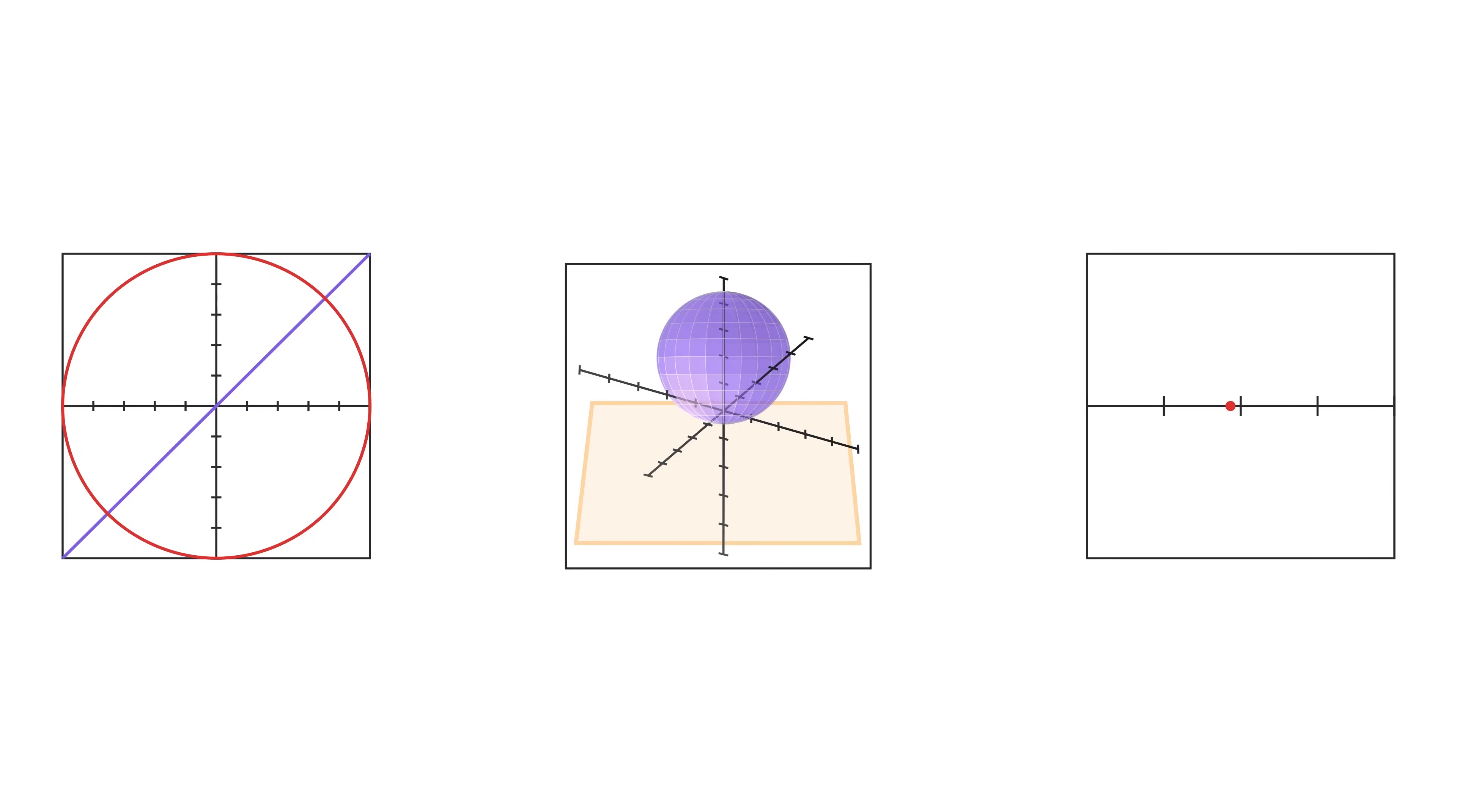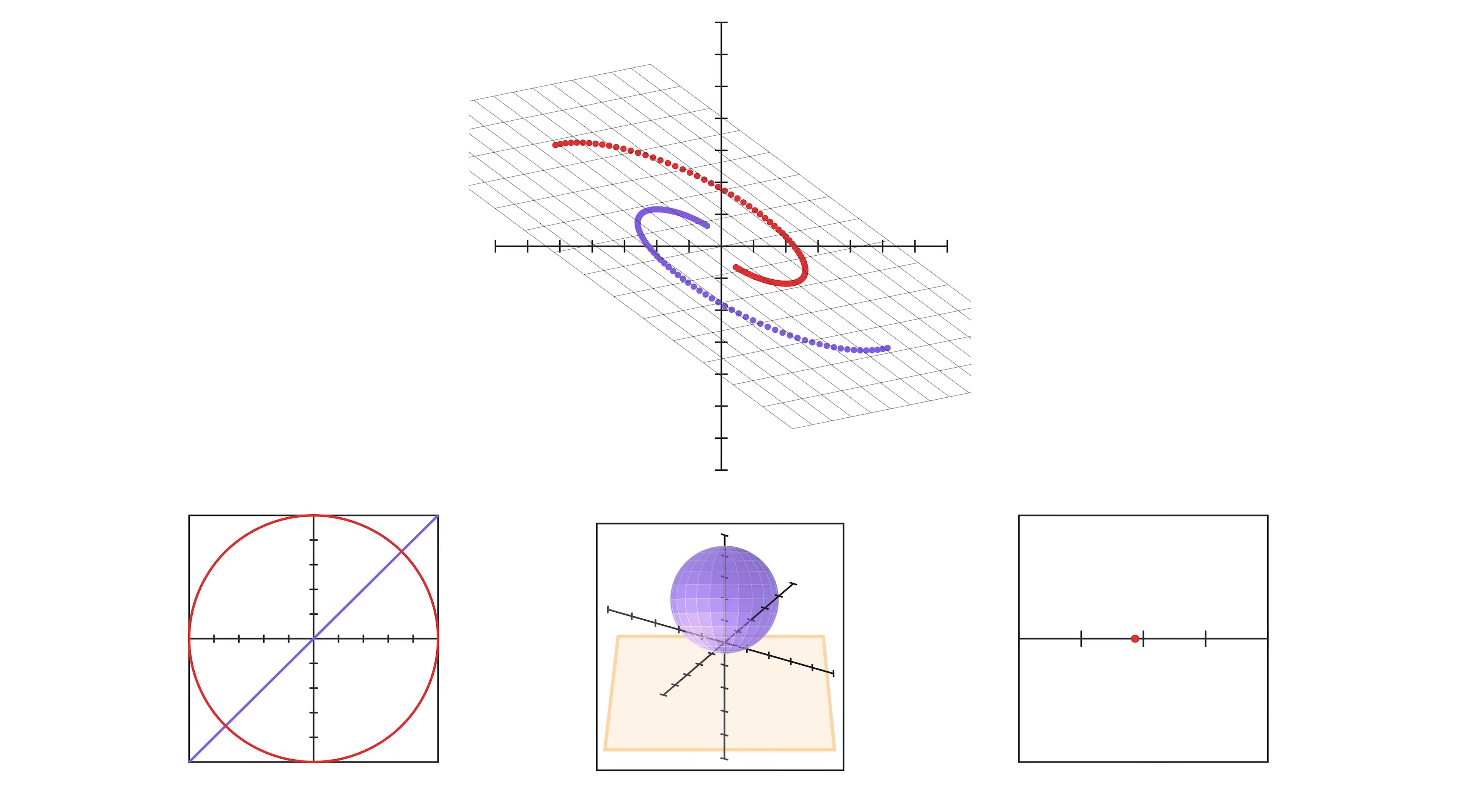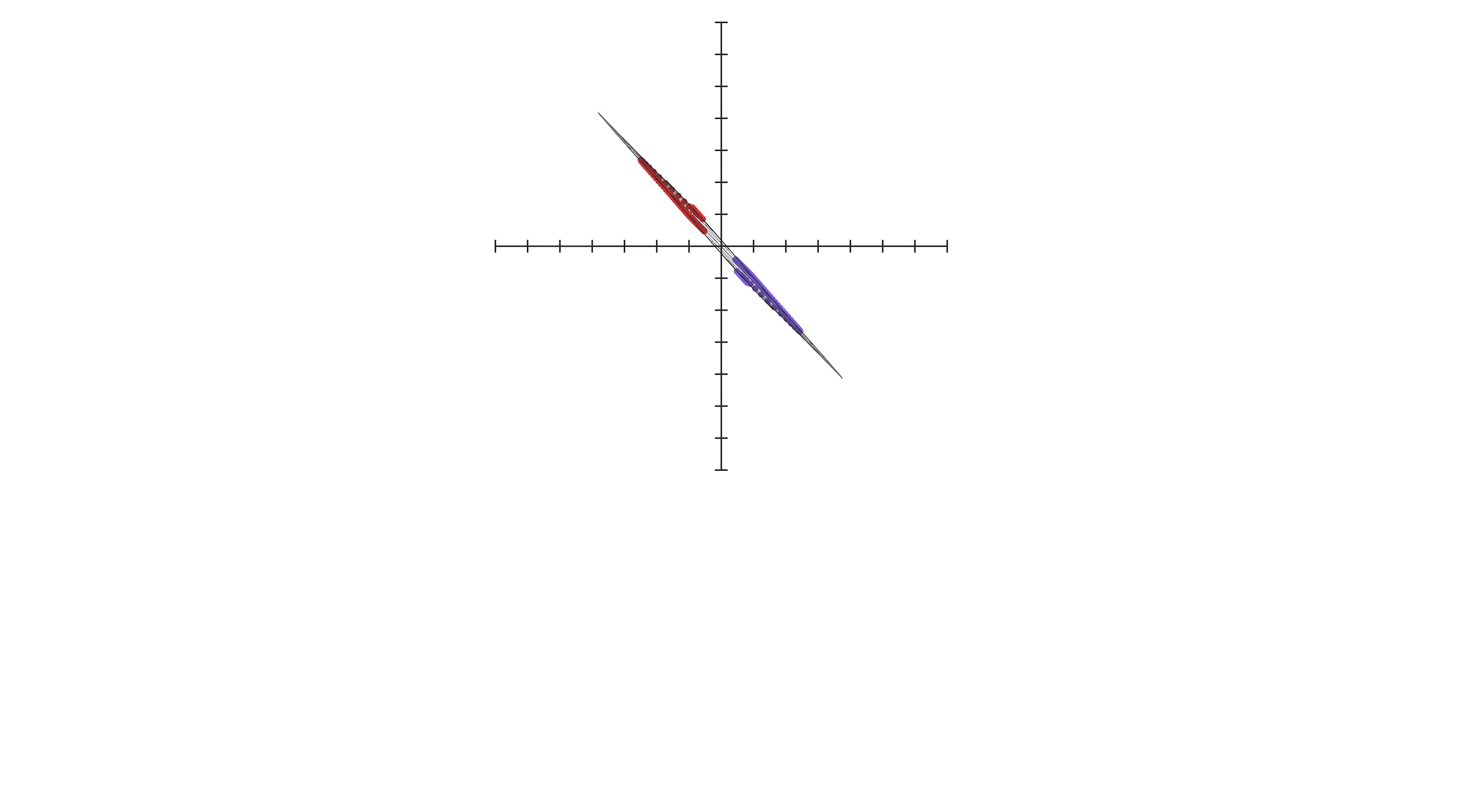And just to repeat, the manifold hypothesis says that real-world datasets actually form these manifolds. The goal of the neural network is to then stretch and morph and disentangle these manifolds such that we can finally separate them using hyperplanes in the final layer.